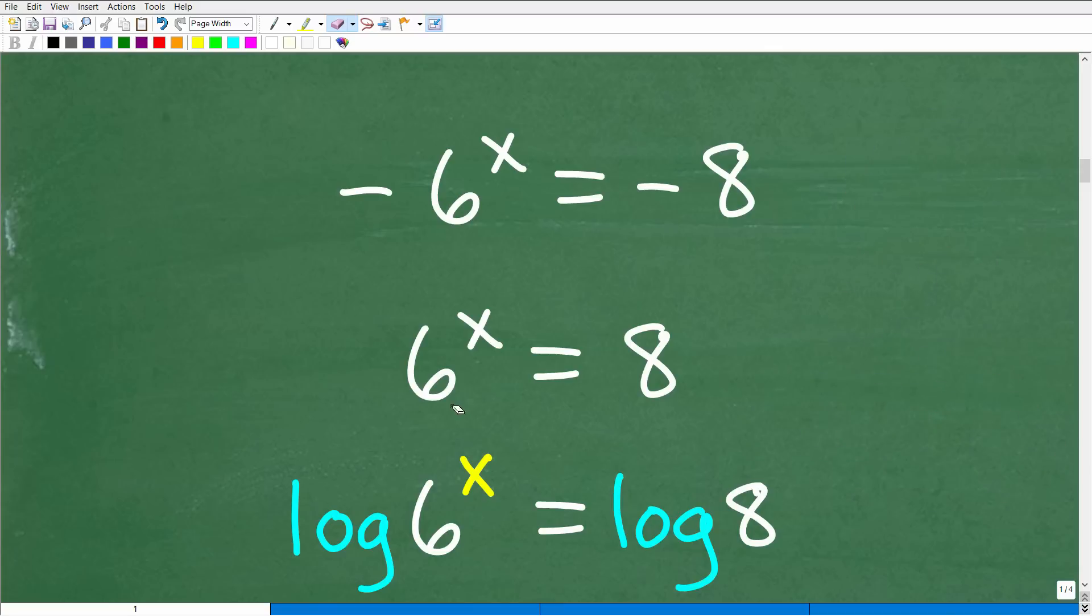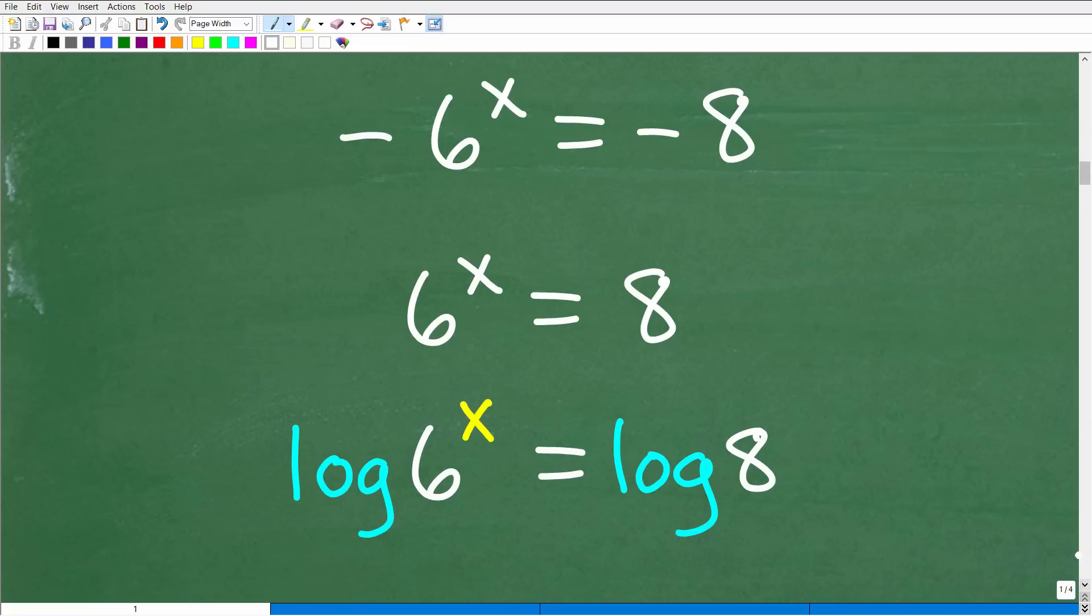Unless your base here is an e, like e to the x. If you see e's, you're definitely thinking natural logarithm. So you've got the common base e. But anyways, I'm digressing. Let's go ahead and get back to the problem. All right, so I'm taking the log of both sides, log of both sides.